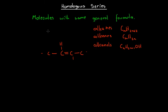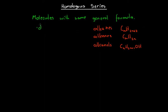When we say that homologous series are groups of molecules with the same general formula, another way of describing that is they are groups of molecules that differ by one CH2 group.